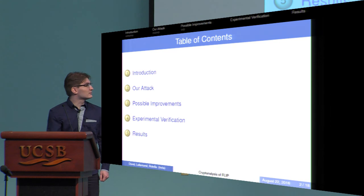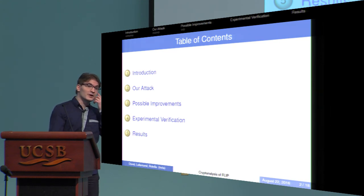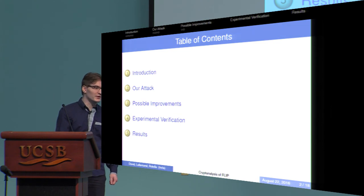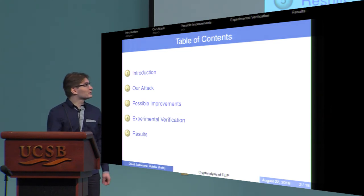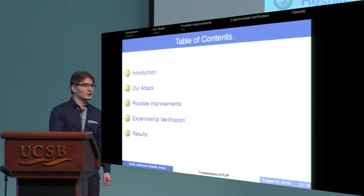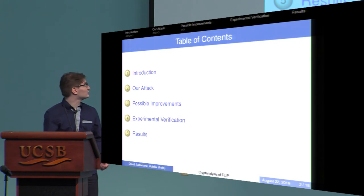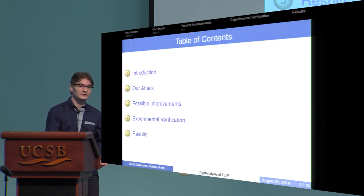I'm going to introduce the context, which is symmetric ciphers for fully homomorphic encryption. I'm going to introduce the cipher, and I'm going to talk about our attack, the possible improvements we have, and the experimental verification we did.